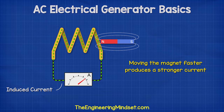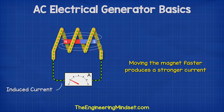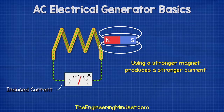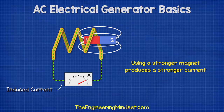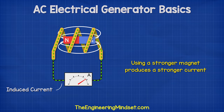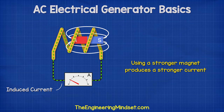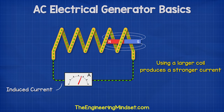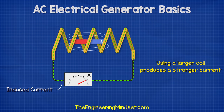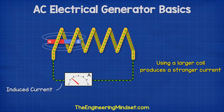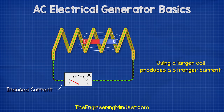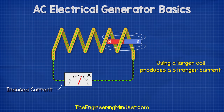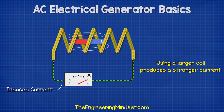If we move the magnet faster, a stronger current is generated. If we use a stronger magnet, the current also increases. If we use a larger coil with more turns, this will also generate a larger current.